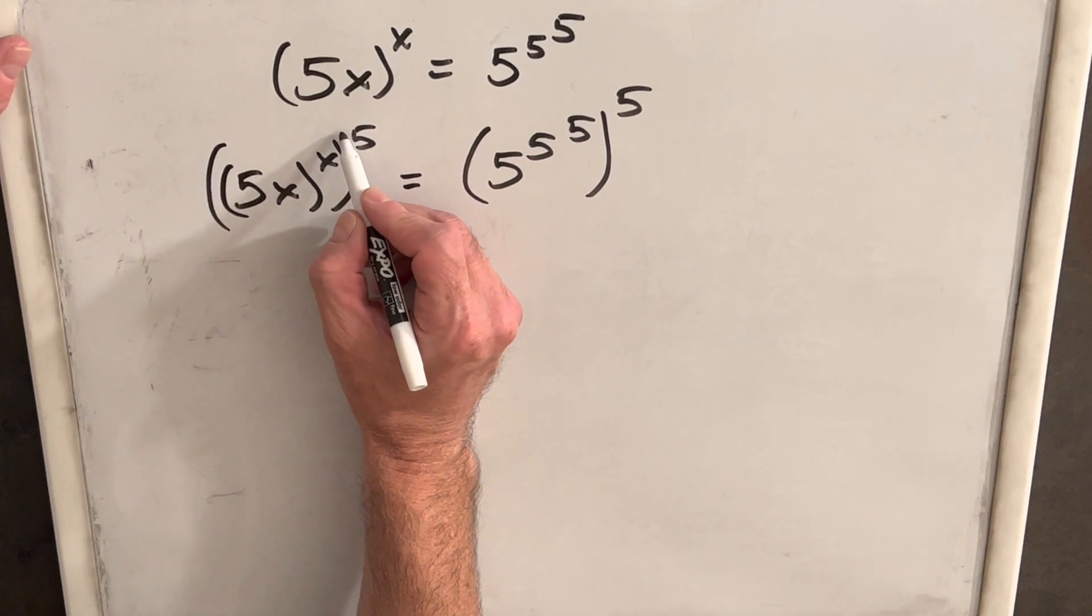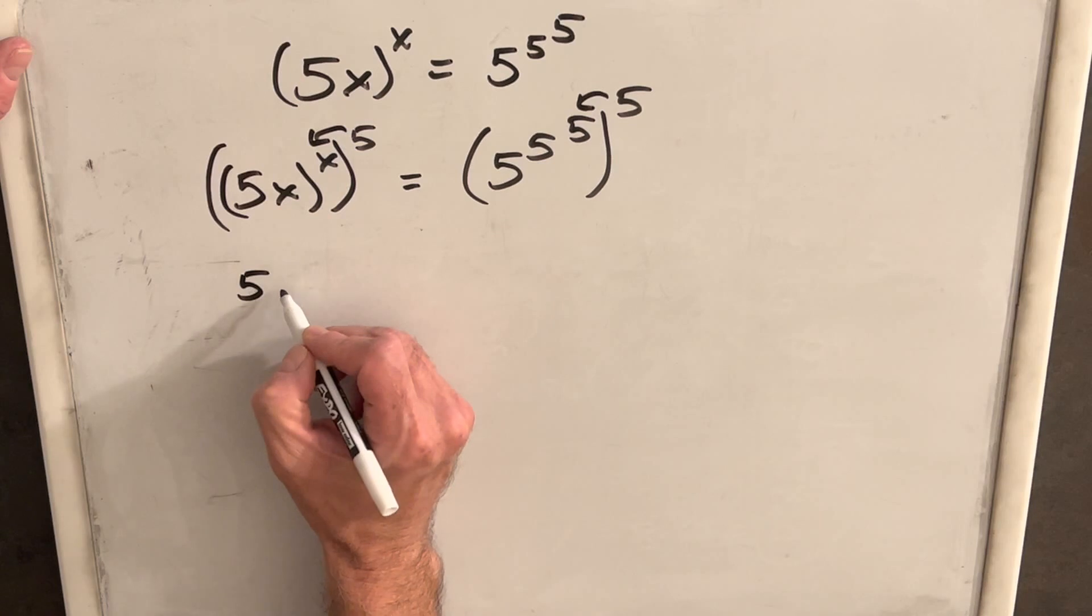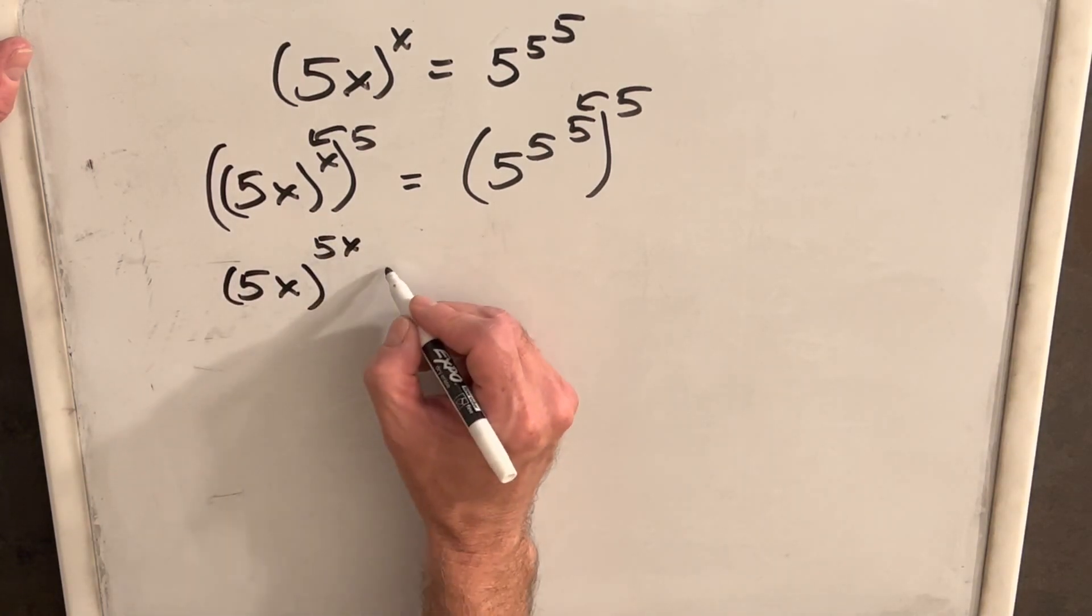All we can do is we can multiply this inside again carefully. So this is going to be 5 to the x to 5 to the x.